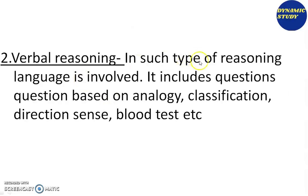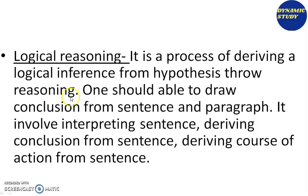The second type is verbal reasoning. In such type of reasoning, language is involved. It includes questions based on analogy, classification, direction sense, blood test, etc. In verbal reasoning, words and sentences are used and we need to analyze them to draw conclusions. For example, blood relationship questions where we have family relations and we need to determine how one person is related to another.